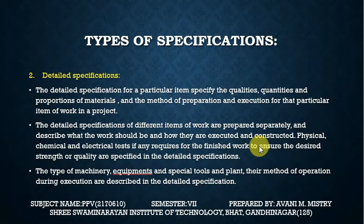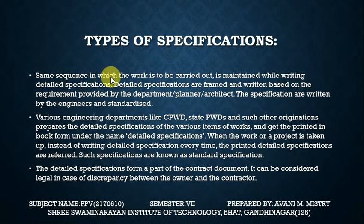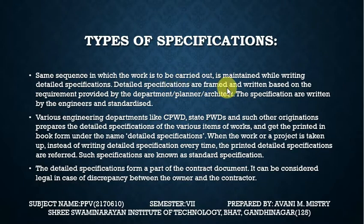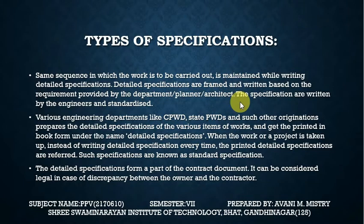If any physical, chemical, or electrical tests are required for the finished work to ensure the desired strength or quality, those are also specified in the detailed specification. The type of machinery, equipment, special tools, and plants and their method of operation during execution are described in the detailed specification. The same sequence in which the work is to be carried out is maintained while writing the detailed specification.